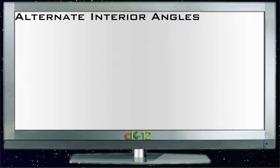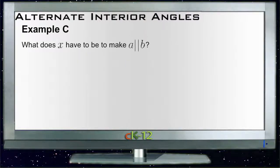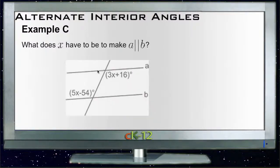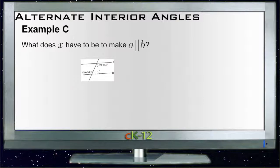Okay, let's take a look at example C. Example C says, what does x need to be in order to make a parallel to b? And x looks like this shape right here.